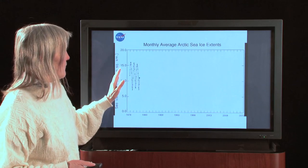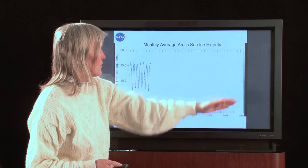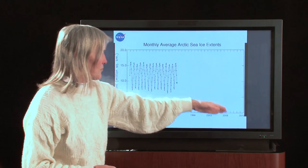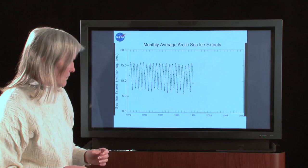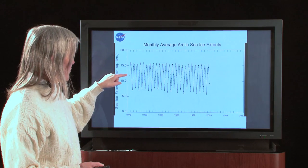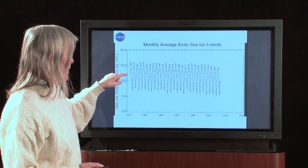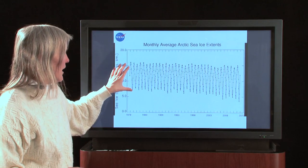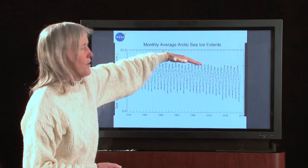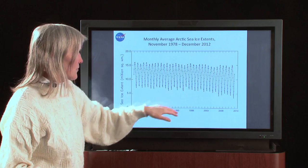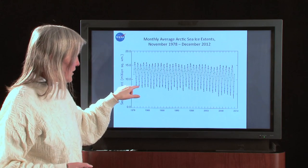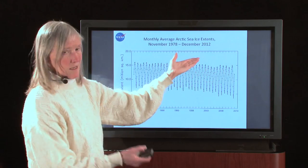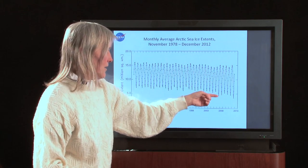We had the computer go through the entire record, and in this animation we go from November of 1978 up to the end of 2012. You can see how every year there's way more ice in the winter than in the summer. But you can also see that there are differences — it's not like every year it gets up to the same height and down to the same level.